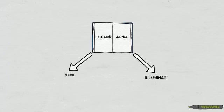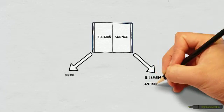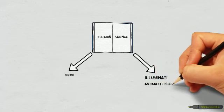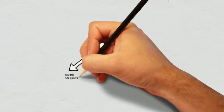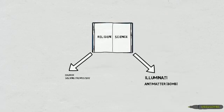The four main symbols are of course the Illuminati, the church, the antimatter which is the bomb, and the fact that the church solved the mystery and defeated the Illuminati.